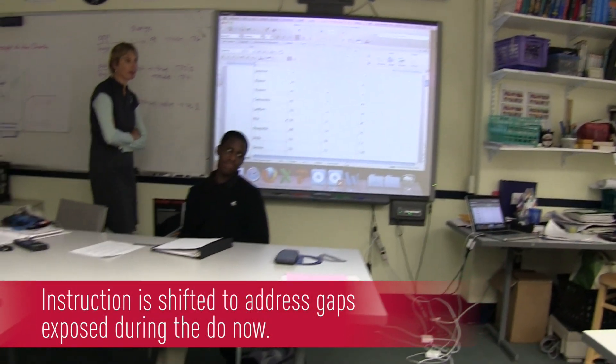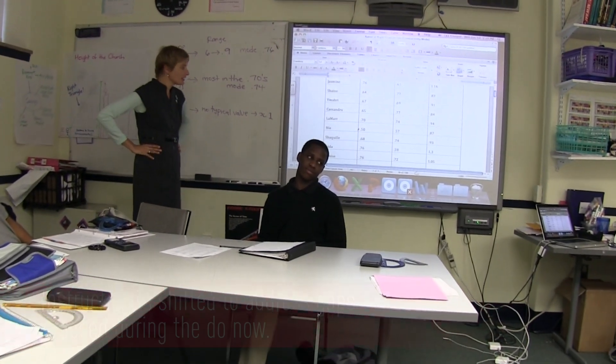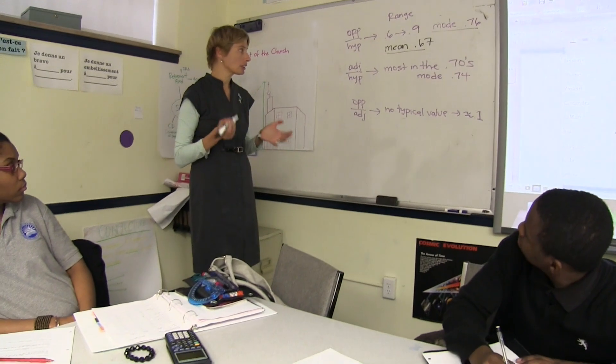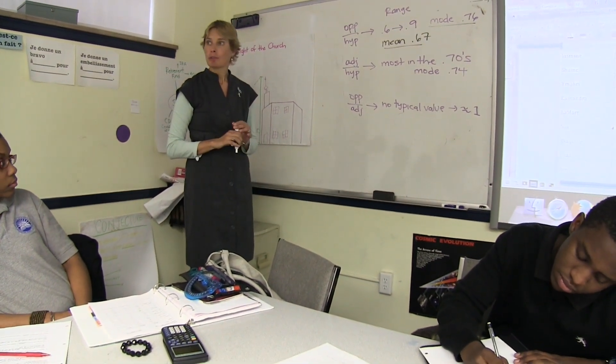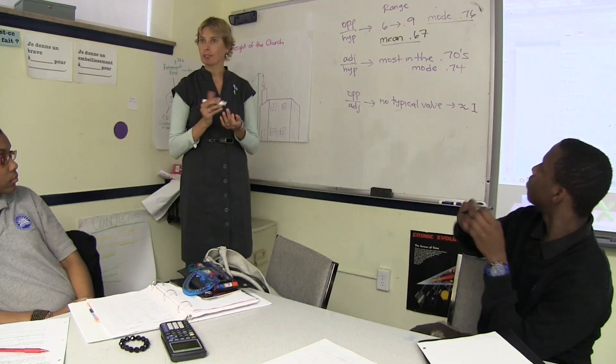How would you get a typical value for that? I think I added them all up and then divided by the number of students — all the data. And what did you get? .67. So you found the mean. You've got the mean and the mode — two ways to measure typical values. Anybody use a different method for finding a typical value?